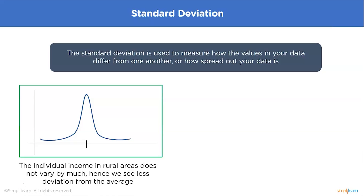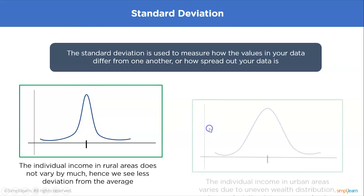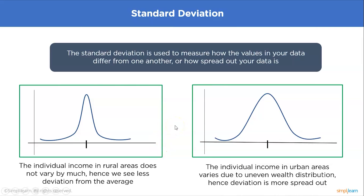Consider income in rural versus urban areas. In rural farming areas, income doesn't differ much — everyone earns roughly the same — so the bell curve has a very low standard deviation and a narrow peak. In urban areas, wealth distribution is very uneven: some people earn very high incomes while others earn very low, and the data is more spread out, resulting in a wider bell curve peak with a higher standard deviation.